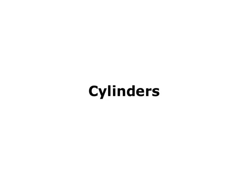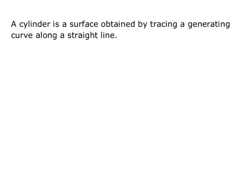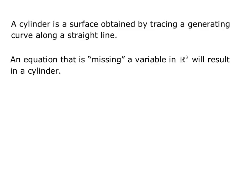This video is for Calculus 3 on the topic of cylinders in three dimensions. A cylinder is a surface obtained by tracing a generating curve along a straight line. An equation that is missing a variable in R³ will result in a cylinder.